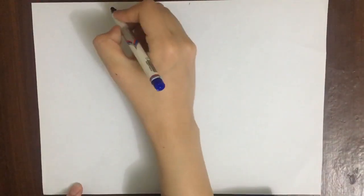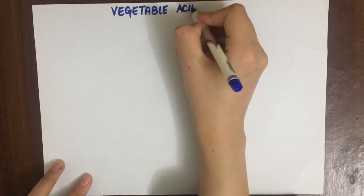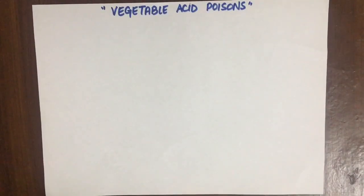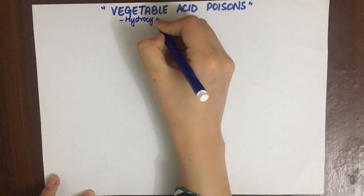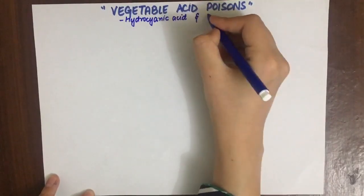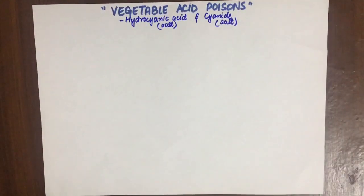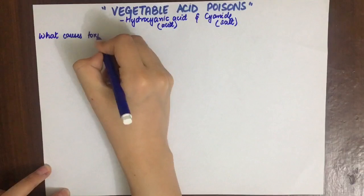Let's talk about vegetable acid poisons. Why are they called vegetable acid poisons? Because they are present in many fruits and vegetables such as peach, plum, bitter almonds, and leaves of cherry. They are basically two poisons - the same thing but different forms. One is hydrocyanic acid, which is an acid, and the other is cyanide, which is the salt of hydrocyanic acid.